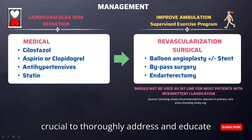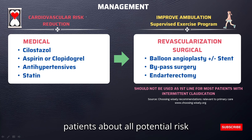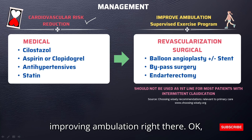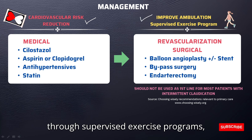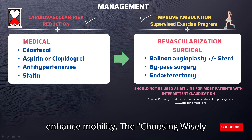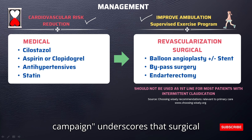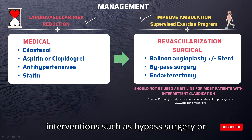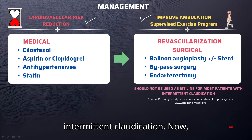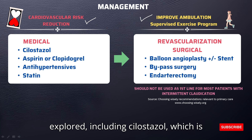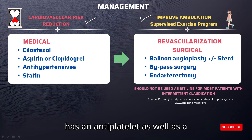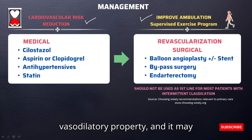In managing PAD, it is crucial to thoroughly address and educate patients about all potential risk factors. Emphasis should be placed on improving ambulation through supervised exercise programs, which may involve exercising to the point of pain, as this can significantly enhance mobility. The Choosing Wisely campaign underscores that surgical interventions such as bypass surgery or angioplasty should not be the first-line approach for most individuals with intermittent claudication. Pharmacological options may be explored, including cilostazol, a phosphodiesterase inhibitor with antiplatelet and vasodilatory properties that may alleviate symptoms.